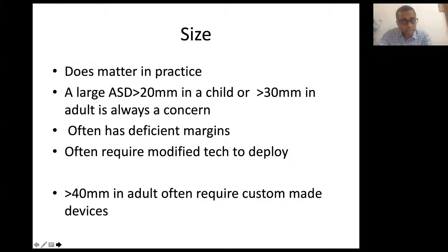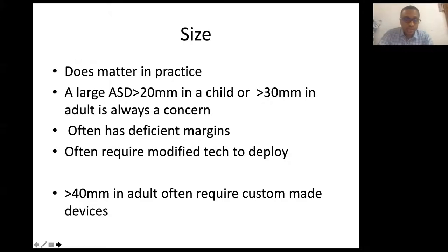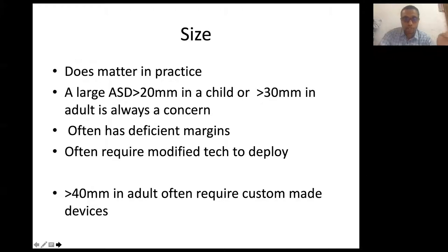Larger defects with deficient margins and associated anomalies like malalignment of the septum often require modified techniques to deploy. Starting from size, it tells you where complexity begins. Whenever you have an adult with an ASD measuring more than 40 mm, more often than not you require custom-made devices which need to be ordered from the company for that particular patient. In summary, size definitely has an impact on planning and execution.